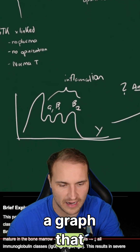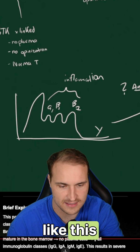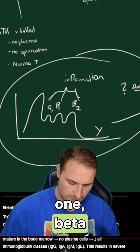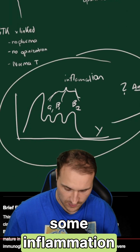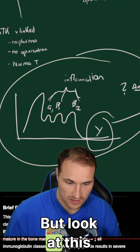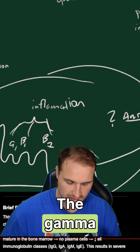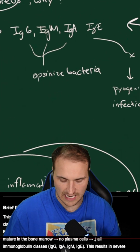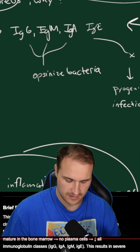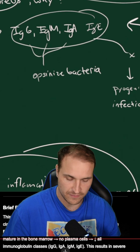They're going to give you a graph that kind of looks like this. The alpha-1, beta-2 bands are maybe elevated because you have some inflammation in your body, but look at the gamma region down here — this is hypo- or agammaglobulinemia, meaning these immunoglobulins are deficient.